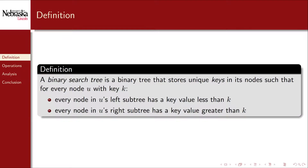A binary search tree is a binary tree that stores unique keys in its nodes. It has the property that for every node u with key k: every node in u's left subtree has a key value strictly less than k, and every node in u's right subtree has a key value strictly greater than k.